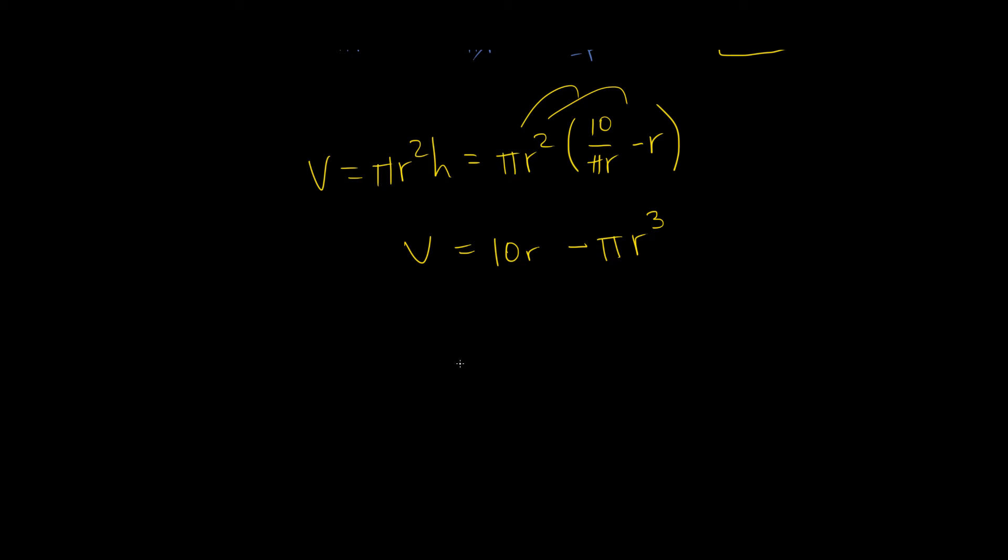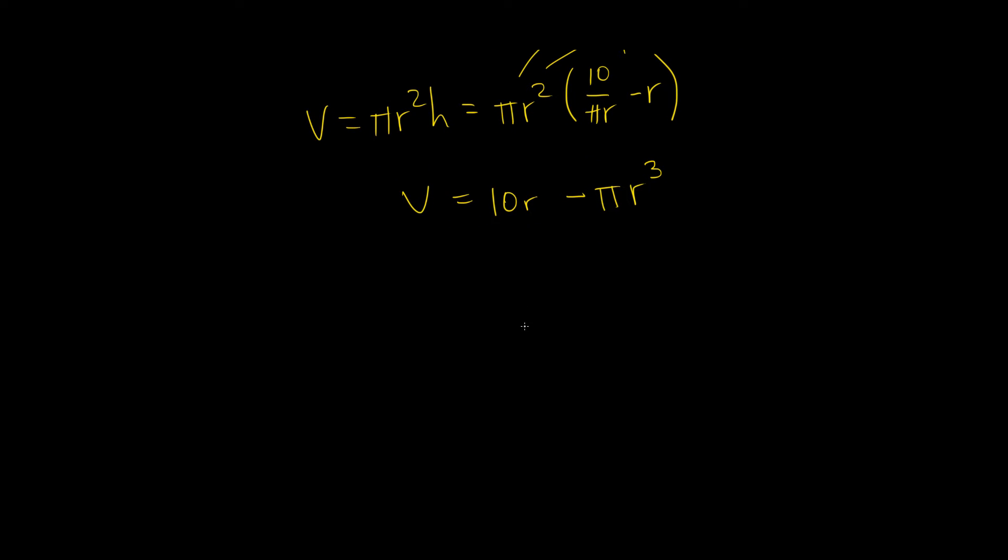So whenever we're trying to maximize something, we always look for the 0 for the first derivative, the critical points, because that points to either a maximum or a minimum. So in this case it's pretty obvious that our volume is at a minimum when our radius is 0 because then our volume is 0, so any critical point that we find is going to give us a maximum. So what we're going to do is we're going to find the derivative of volume, so v prime, and that's going to give us 10 minus 3 pi r squared.